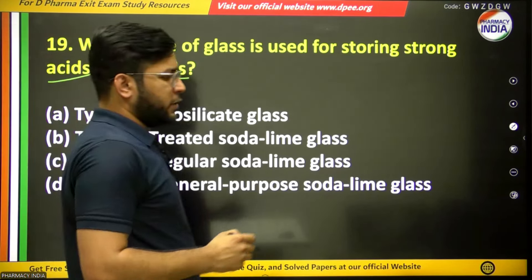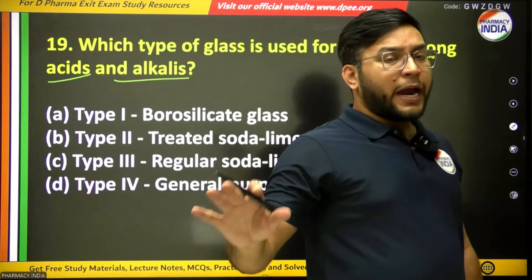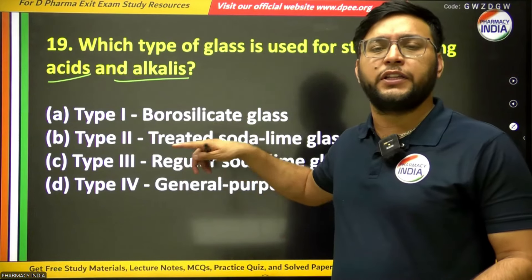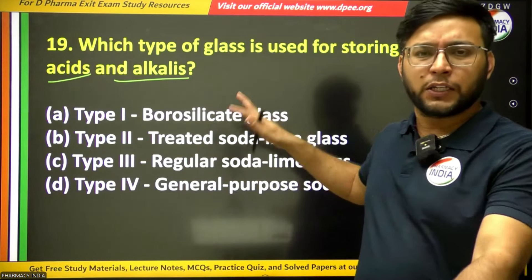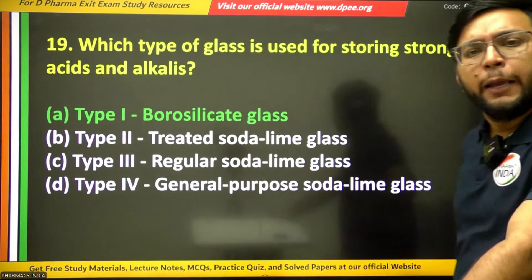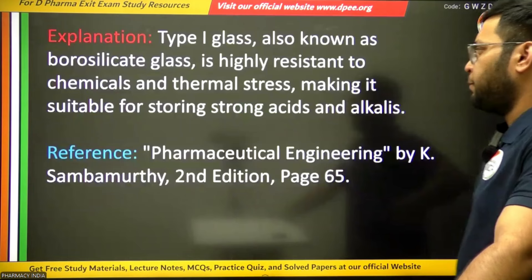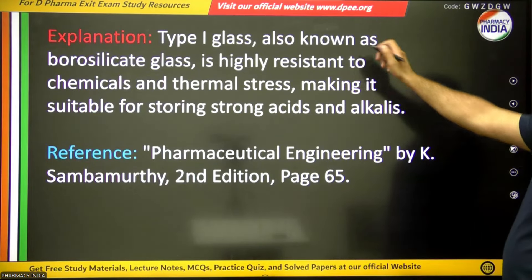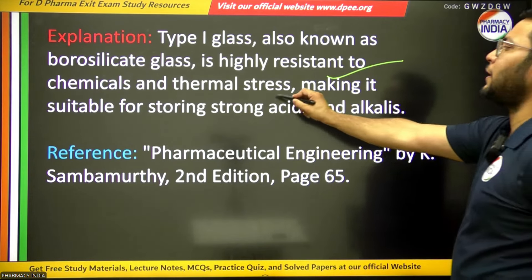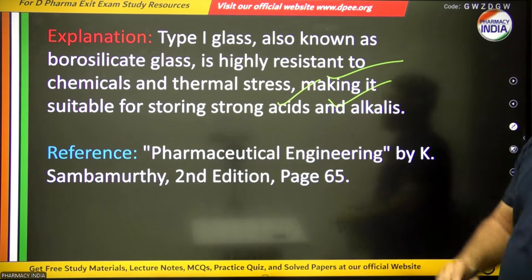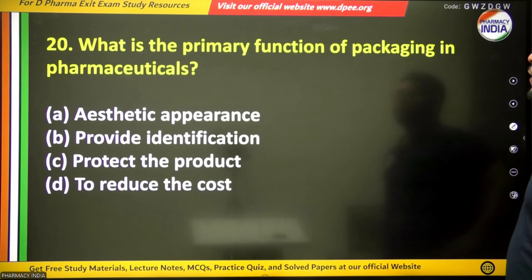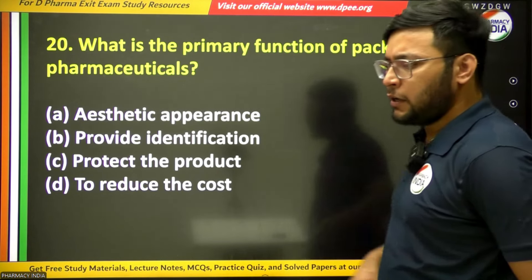The nineteenth question: which type of glass is used for storing strong acids and alkalis? Please learn the types of glass with their tests, as questions are frequently asked from these points. The answer is Type 1 borosilicate glass — Type 1 glass is highly resistant to chemicals and thermal stress, making it suitable for storing strong acids and alkalis.